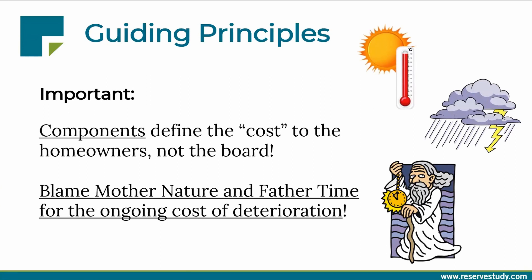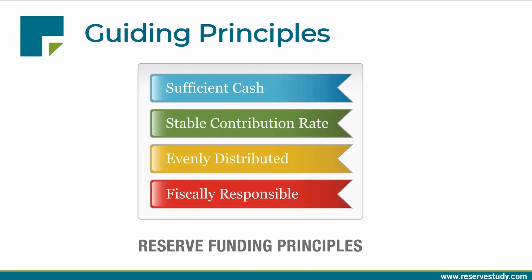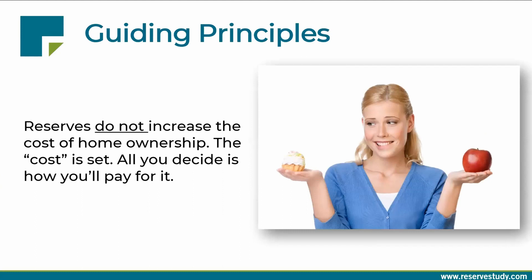One of the three results of a reserve study is the multi-year funding plan. As we create funding plans, we're guided by four principles: the funding plan needs to provide sufficient cash for the projects you're going to fund through reserves, needs to be stable through the years, needs to be even and fairly distribute the reserve funding burden over the owners, and fundamentally needs to be fiscally responsible. The board and management have a choice about how the association homeowners pay for that deterioration — either through ongoing reserve funding, waiting and getting special assessed, or doing nothing and watching property values decline.